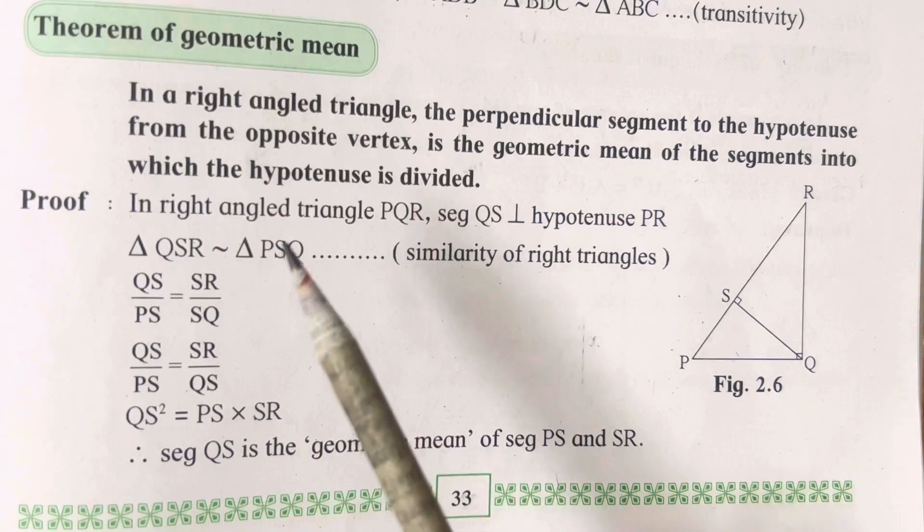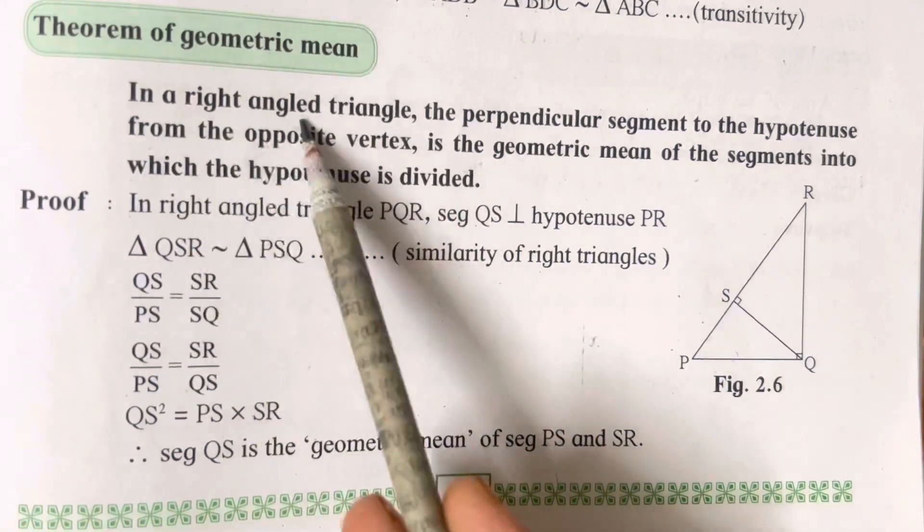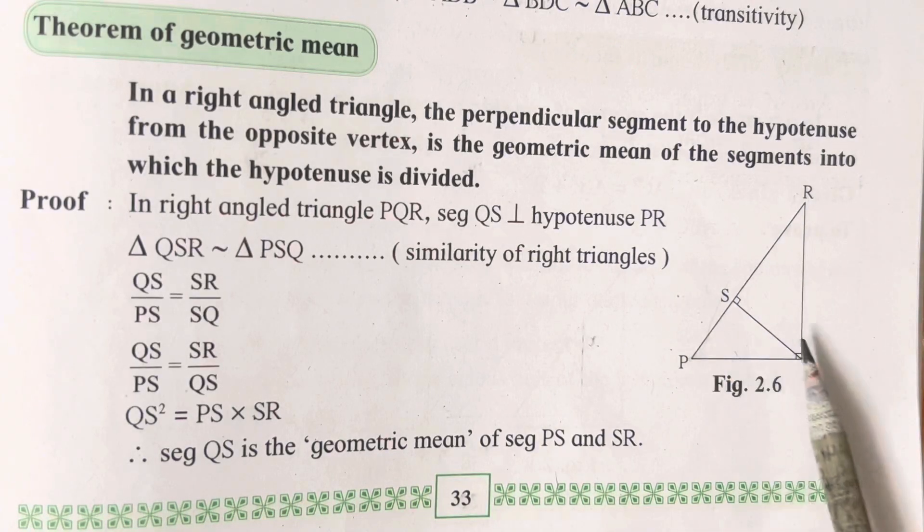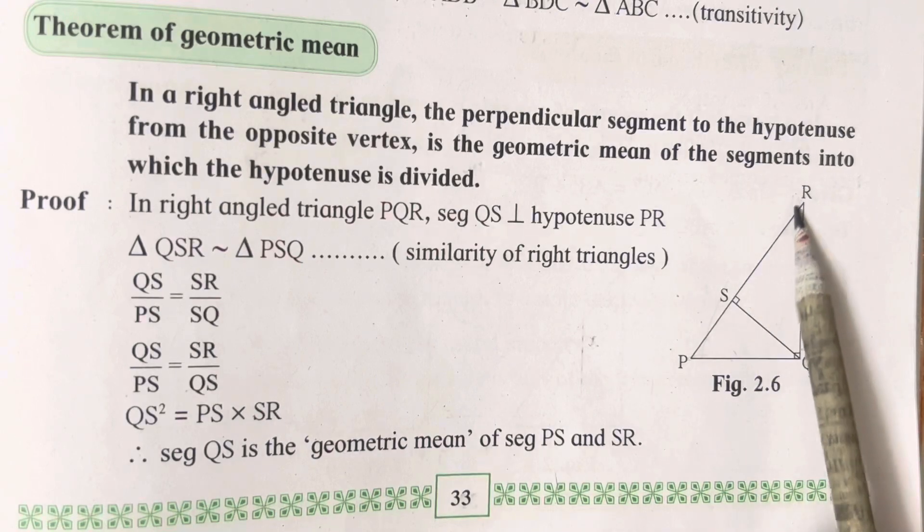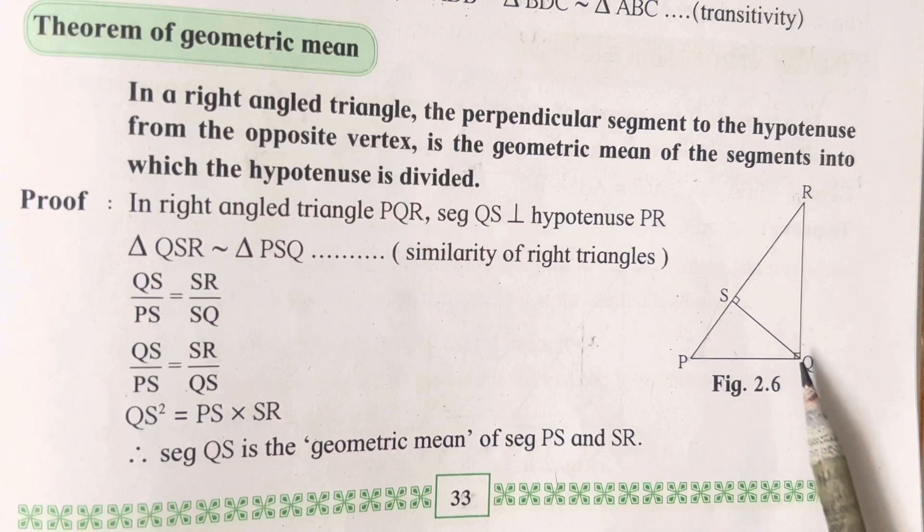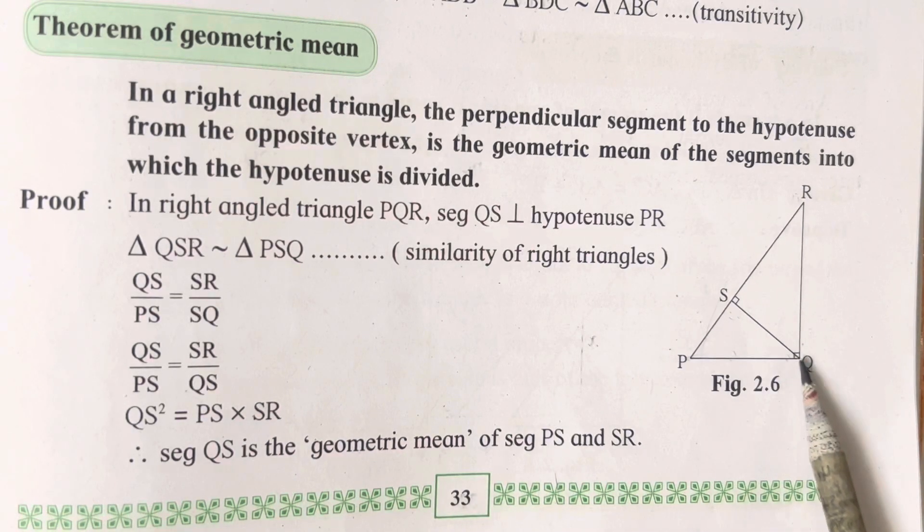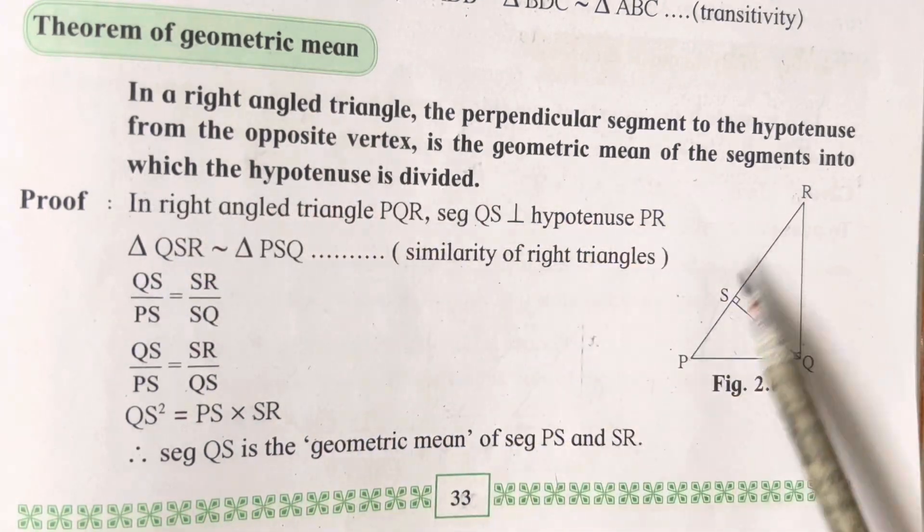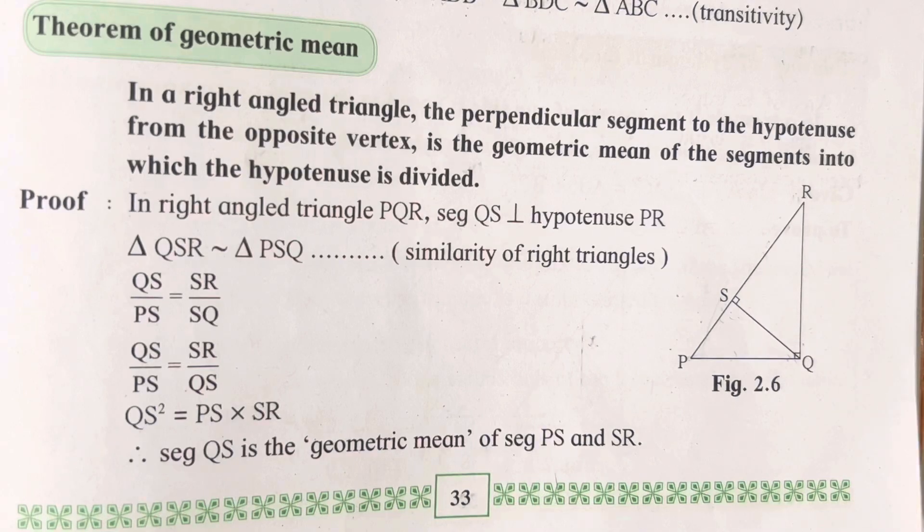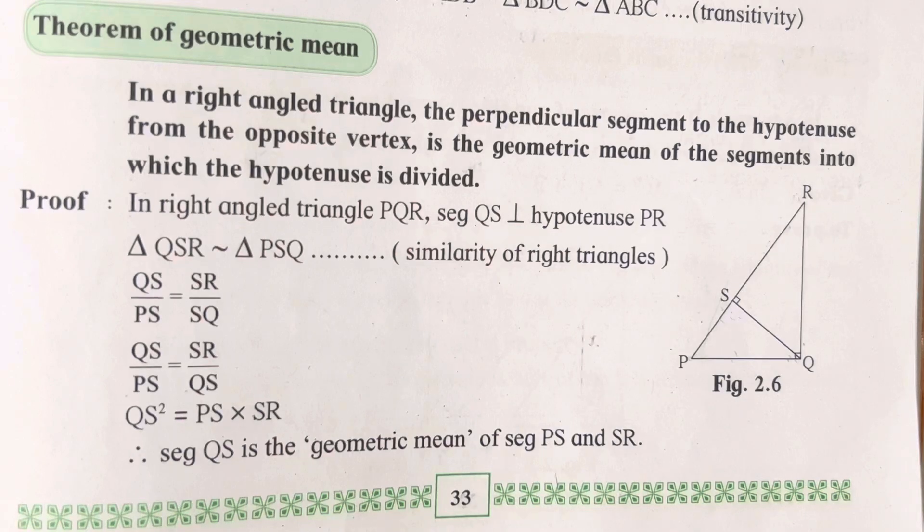Let's start with what the theorem statement states. In a right-angled triangle, the perpendicular segment to the hypotenuse from the opposite vertex is the geometric mean of the segments into which the hypotenuse is divided. Now the statement looks difficult, but when we start proving it, it's very easy to understand.